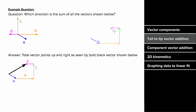Now that all vectors are drawn, the total vector goes from the tail of the first vector to the tip or head of the last vector. This gives the direction and magnitude of the total vector a plus b plus c plus d.